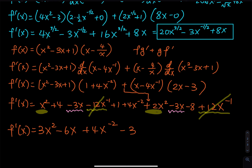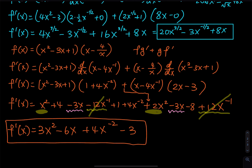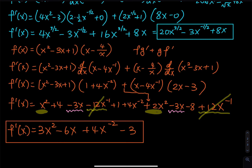Let me check: negative 12 and positive 12 cancel; x squared plus 2x squared is 3x squared; minus 3 minus 3 is minus 6; 4x to the negative 2 carries over; 4 plus 1 is 5, minus 8 is negative 3. Everything looks fine. That is the derivative of the second function and the end of this video. If you found my instruction helpful and clear, give me a like, share the video, and click subscribe. I'll catch you all in the next one.